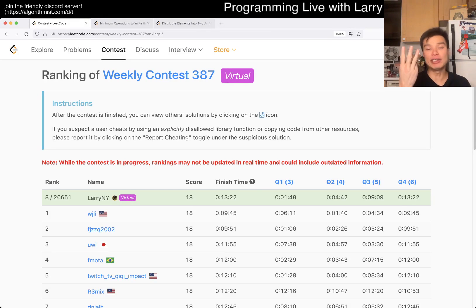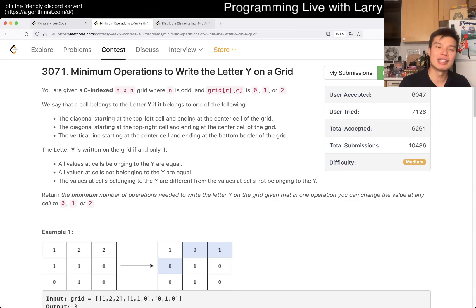Hey everybody, this is Larry. This is Q3 of the Weekly Contest 387: Minimum operations to write the letter Y on a grid. Hit the like button, subscribe button, join me on Discord, let me know what you think about this one.